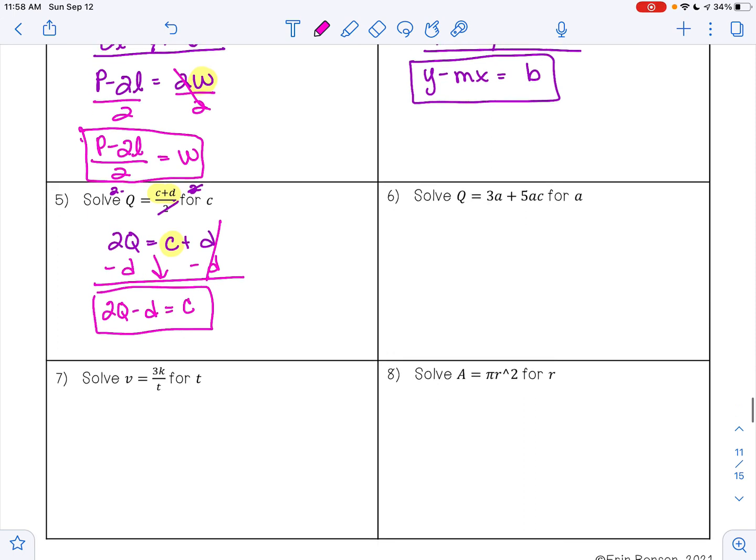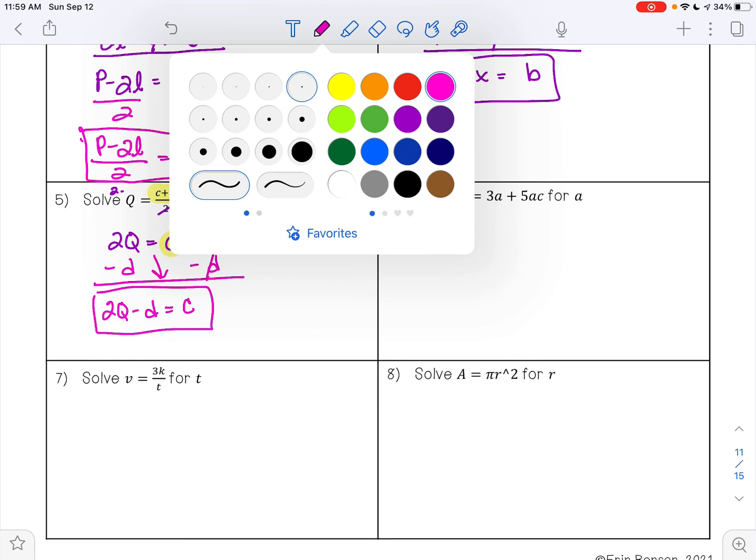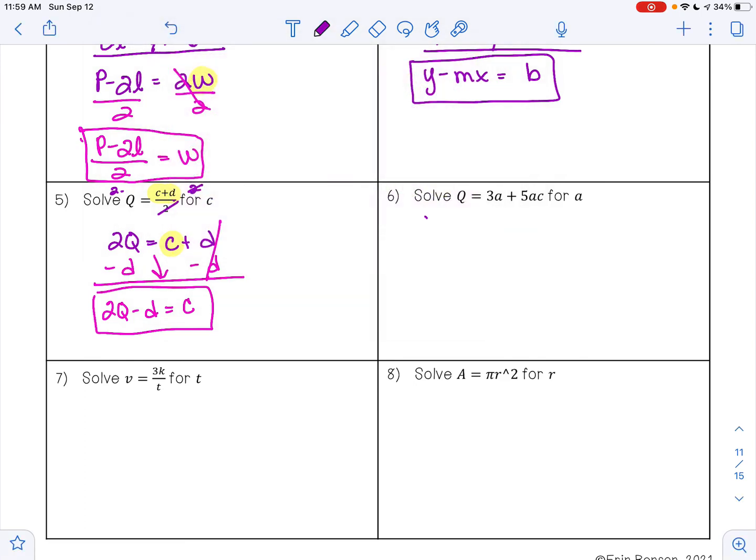Example 6 is a little special case scenario. It says solve Q equals 3A plus 5AC for the variable A. 3A and 5AC are not like terms because this one has a C and this one does not. I can't just subtract this one over to the other side because it will still have an A in it, and I need all the A's on one side of the equation. What we need to do here is something called using the distributive property backwards. So it's like I had an A out in front here and then I distributed it to both of these terms.